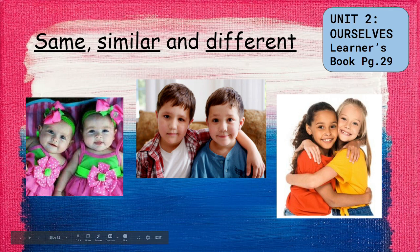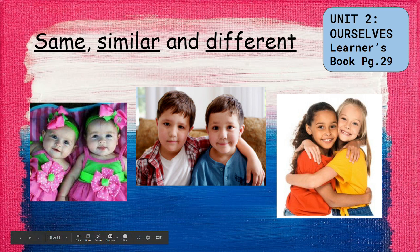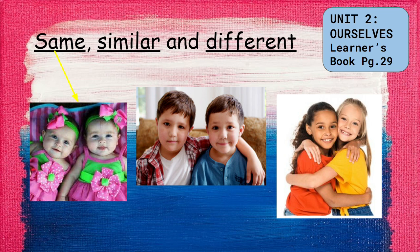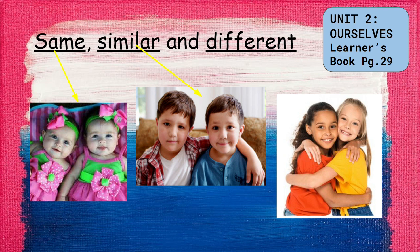Look at the first picture of these cute babies — they are the same, and we call them identical twins. Identical means they are exactly alike. Now the second picture — you can see two cute boys. They have similar hair color, similar skin color, and even the shape of their nose is similar. But not the same, because look at those eyes — they have different shapes.